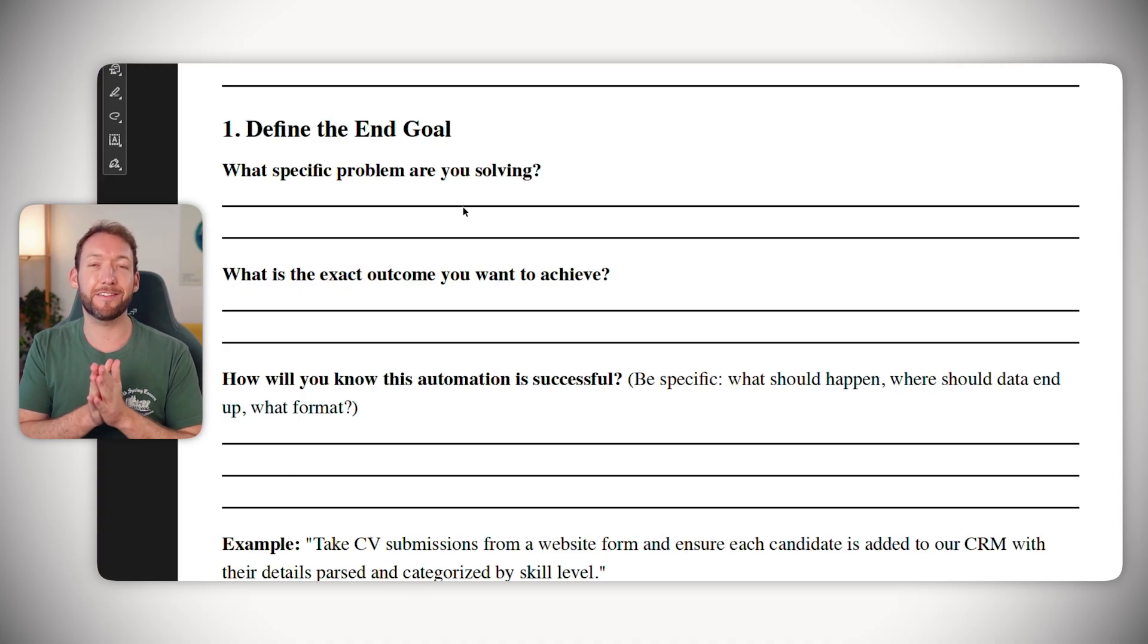And the outcome that we want to achieve? We're probably looking to save our HR department, let's say as an estimate, two hours per day with this data entry. So every time we put up a new role for our business, at the moment we're manually spending two hours per day with data entry, putting it into our CRM and actually reading through those CVs. So instead of doing that, the outcome we want is that two hours saved so that they can focus on other initiatives instead.